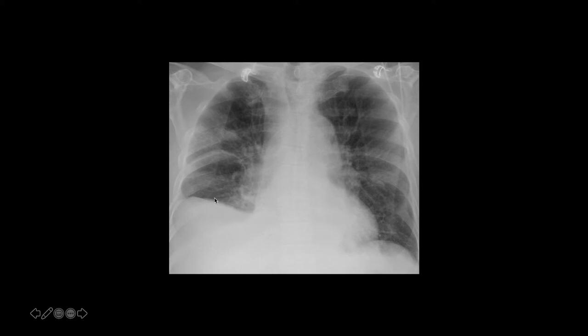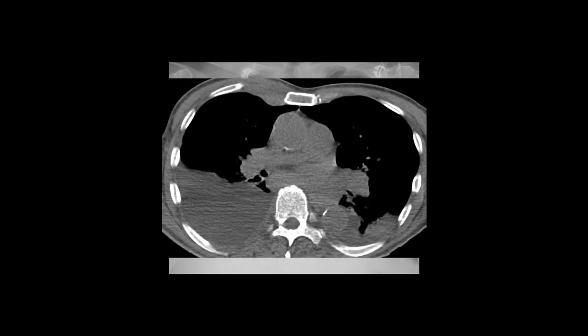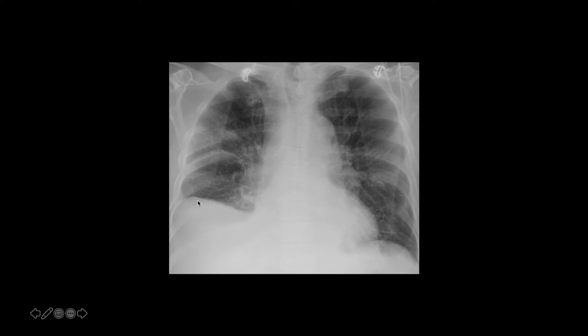What looks like the right hemidiaphragm appears elevated compared to the left side, but it doesn't have the normal shape of the diaphragm — it peaks more laterally, whereas the normal hemidiaphragm should have its peak in the middle. This is a sub-pulmonic effusion, where the pleural effusion is collecting just inferior to the lung. CT done at the same time shows a very large pleural effusion. If the apparent diaphragm doesn't have the right shape, think about sub-pulmonic effusion or lobar atelectasis.